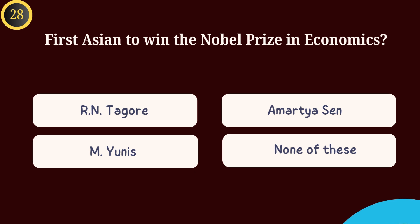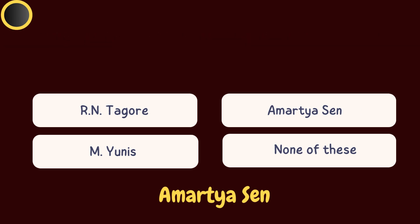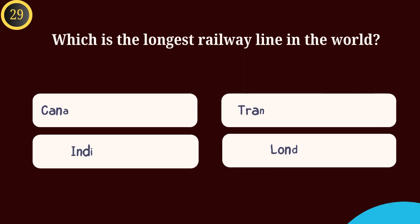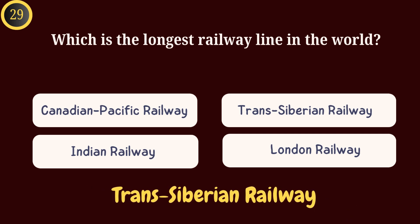Question 28: The first Asian who got the Nobel Prize in economics was — Answer: Amartya Sen. Question 29: Which is the longest railway line in the world? Answer: Trans-Siberian Railway.